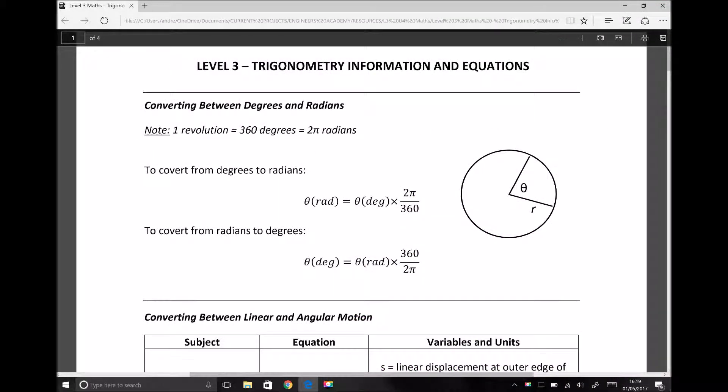What we have on the screen here is the information and equation sheet for this trigonometry topic. You can find this on the study platform on the trigonometry topic page. At the top here I've provided the conversion factors to get from degrees to radians and radians to degrees, and they're there for your reference should you need them.